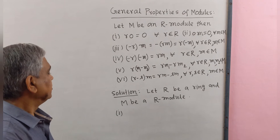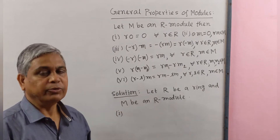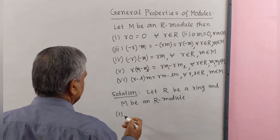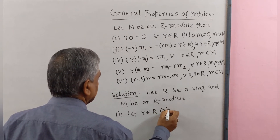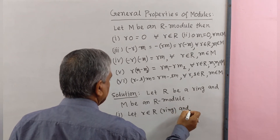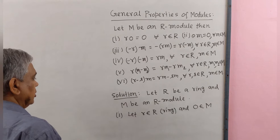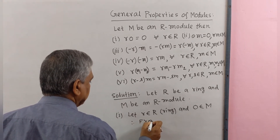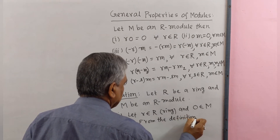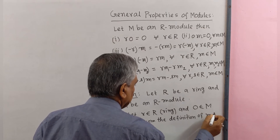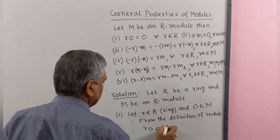Let capital R be a ring and capital M be an R-module. We prove property number one: let small r belong to ring R and zero belong to module M. By definition of module, r·0 belongs to M.